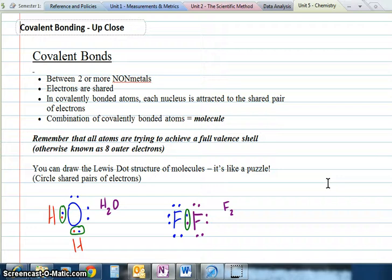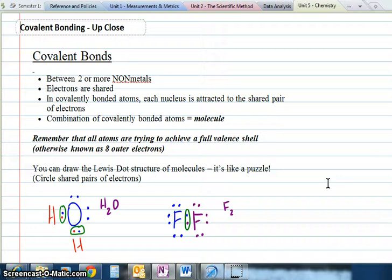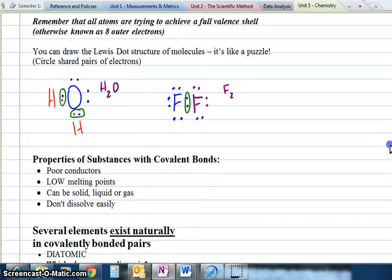The last bit of bonding information is about covalent bonds specifically. They're always two or more nonmetals. The electrons are shared. We call a combination of covalently bonded atoms a molecule. In the electron dot diagram, you'll see circles indicating shared pairs of electrons.